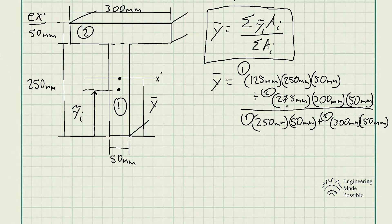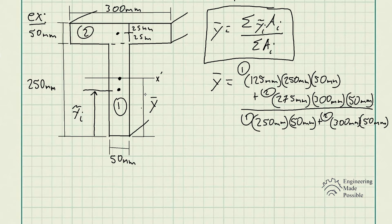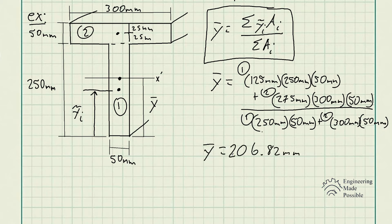For area number two, the length is 300 millimeters and the width is 50 millimeters, giving an area of 300 × 50. The centroid of this rectangle is at half of 50, which is 25 millimeters from the top. The distance from the bottom of the T-beam to this centroid is 250 + 25 = 275 millimeters. Multiplying and dividing by the sum of all cross-sectional areas, we get y-bar equal to 206.82 millimeters from the bottom of the T-beam.